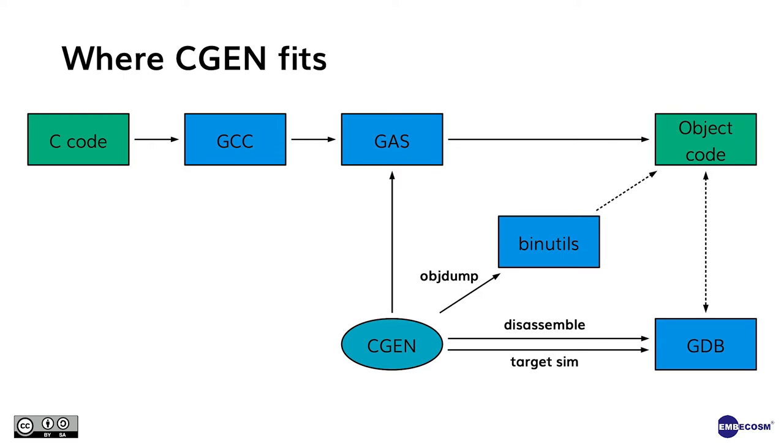CGEN has been part of the GNU toolchain since 2000 when version 1.0 was released. An update was released in 2009 and the tool was considered largely stable, used with over 30 architectures in the GNU toolchain. However, this last year there has been a resurgence of interest with bug fixes, new features, migration to Scheme version 2, and the repository is also being transferred from CVS to Git. This diagram shows the key components of a GNU toolchain. CGEN plays its role in the GNU assembler (GAS), the binary utilities, and the GNU debugger (GDB).